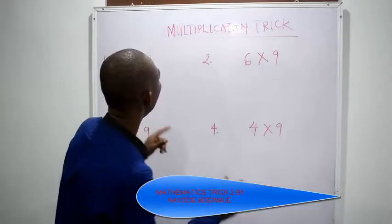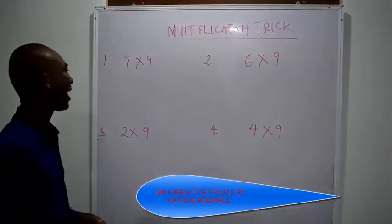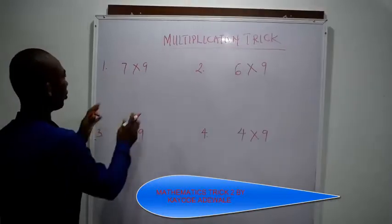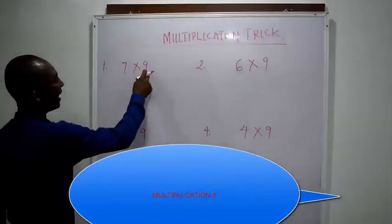So math trick number 2, which is multiplication of 9. How do we go about this trick? 7 multiplied by 9.